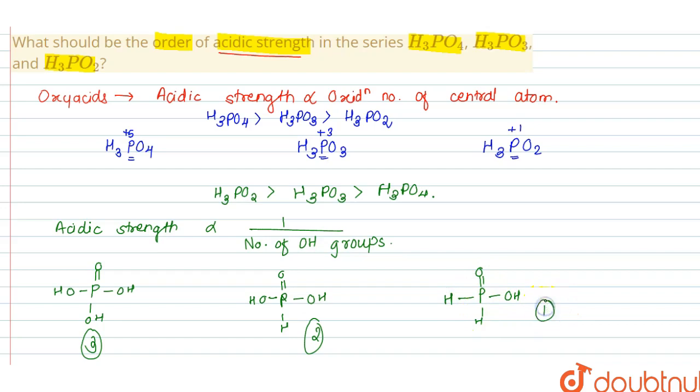Therefore, acidic strength of H3PO2 is higher than that of H3PO3, which has higher acidic strength than H3PO4. So this is the correct order of acidic strength. Thank you.